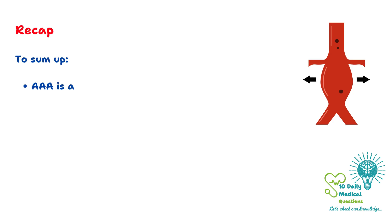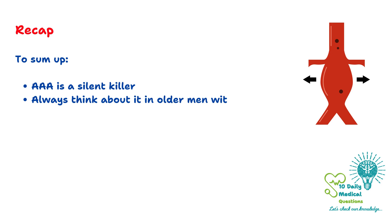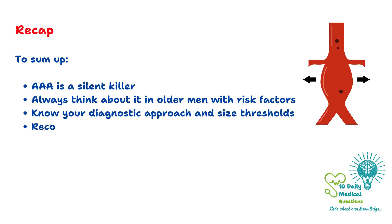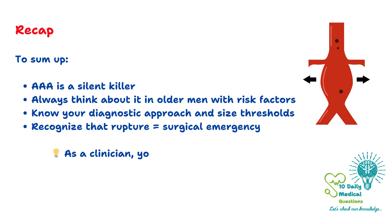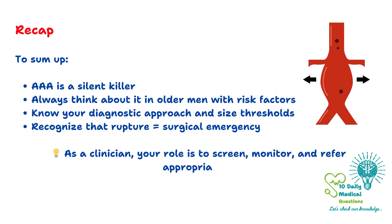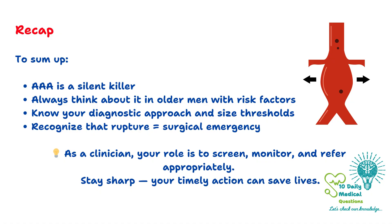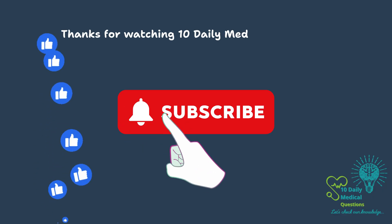In summary, AAA is a silent but potentially lethal vascular disease. It demands a high index of suspicion, especially in older male patients with cardiovascular risk factors. Understanding the pathophysiology, recognizing when to image, and knowing when to refer for surgery can save lives. Prevention through lifestyle modification and risk factor management remains the cornerstone of long-term care.